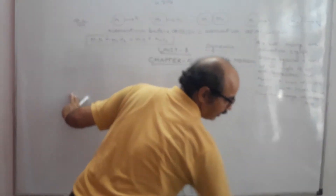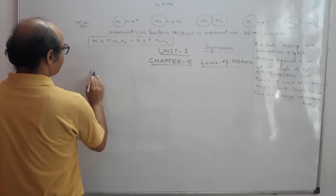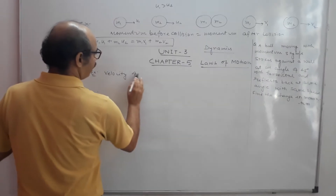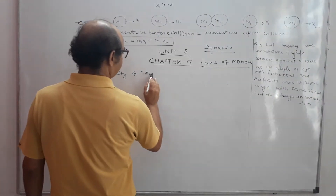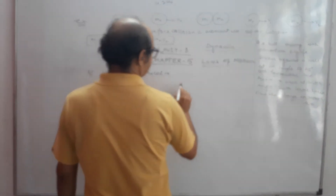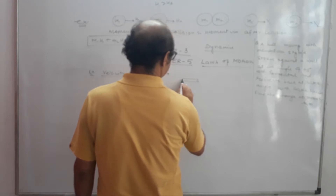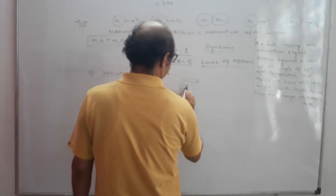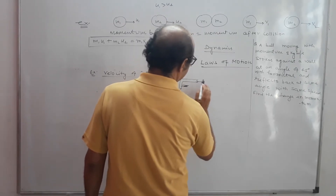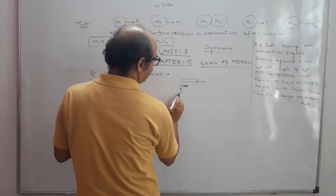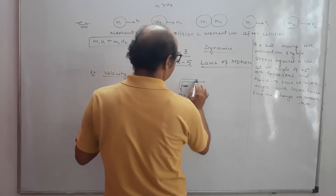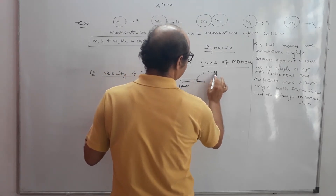Now let's look at an example of velocity of recoil. Suppose there is a gun of mass 5 kg, and a bullet of mass 50 grams. The bullet is fired from the gun with a velocity of 200 meters per second. We need to find the velocity with which the gun recoils.